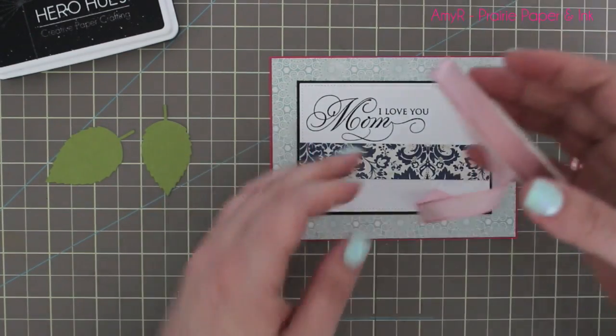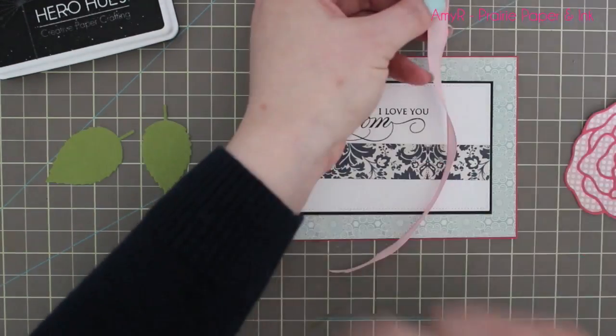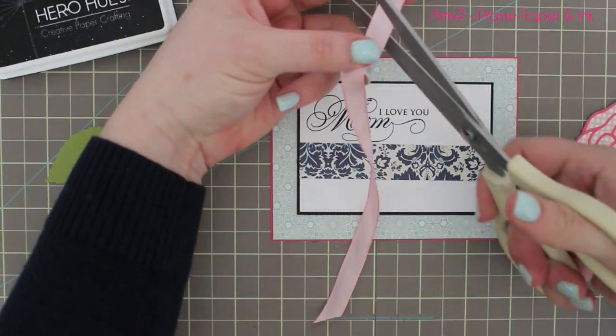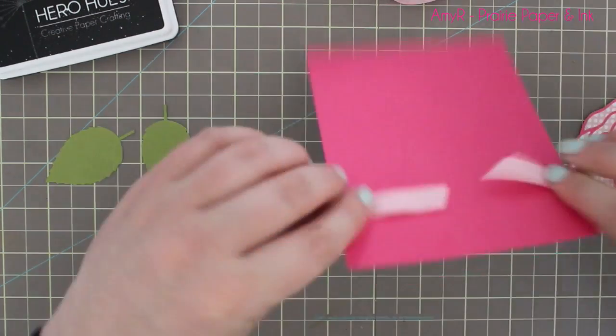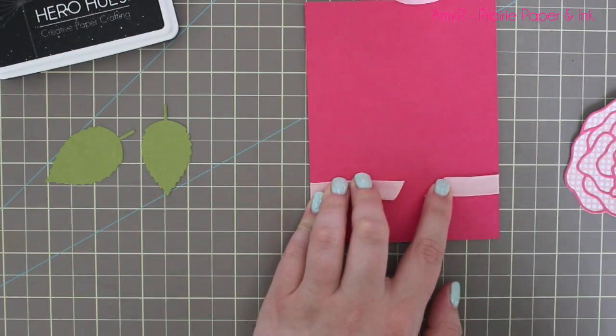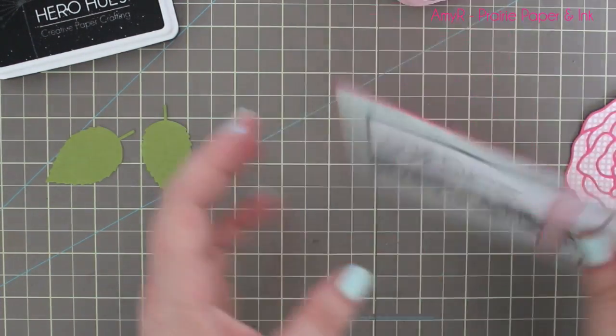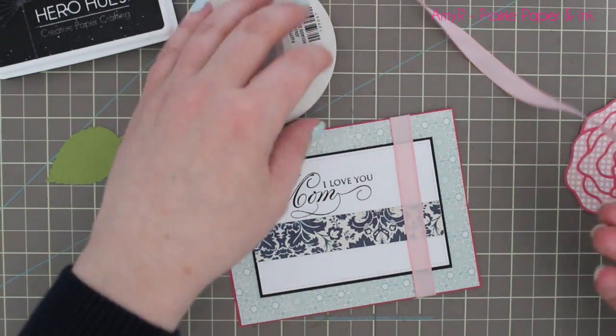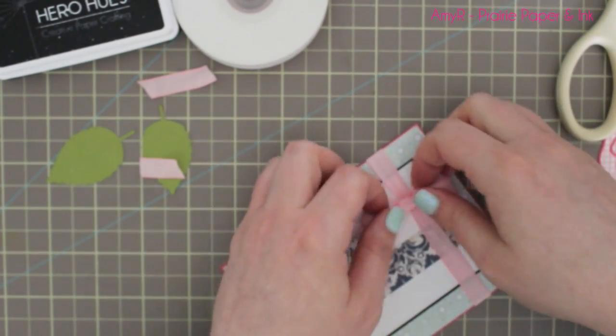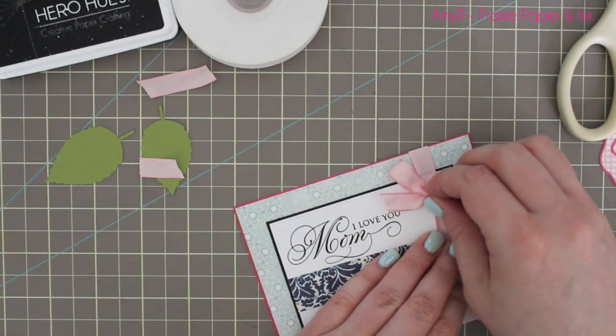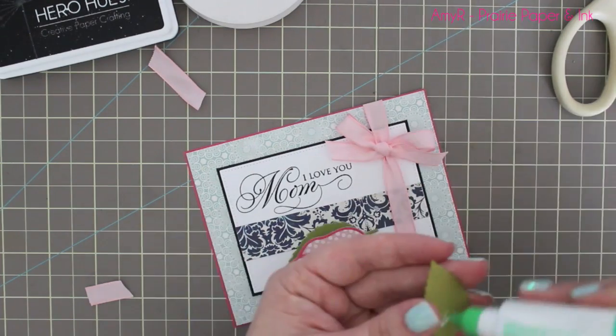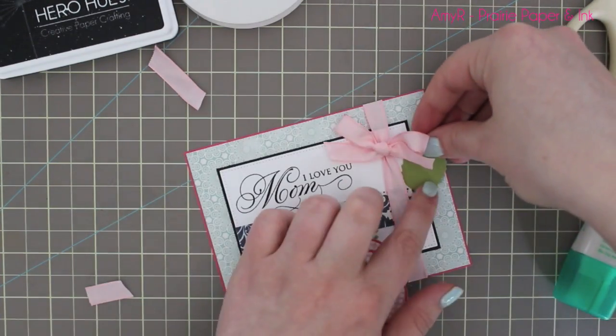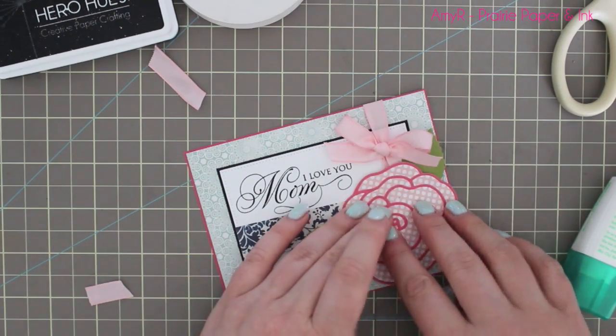I adhered that and then grabbed some pink taffeta ribbon—I don't even know if Stampin' Up still makes this. I've had mine for years and I'm slowly starting to run out of it, but it is one of my favorite ribbons. I love the width and how soft it is, and it ties the most perfect bows. This lighter pink one is so pretty. I wrapped that around my card, then taped off the back, and tied the bow into place. Then I determined where I wanted the leaves to go and adhered those first, and then added my adhesive to the rose.